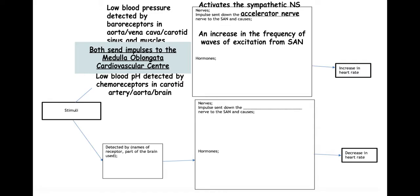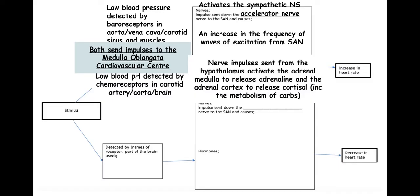The hormones involved here, which will also increase the heart rate, are triggered by nerves — nerve impulses stimulated by the medulla oblongata and the cardiovascular centre. The cardiovascular centre sends impulses to the hypothalamus, which activates the adrenal medulla to release adrenaline and also the adrenal cortex to release cortisol.